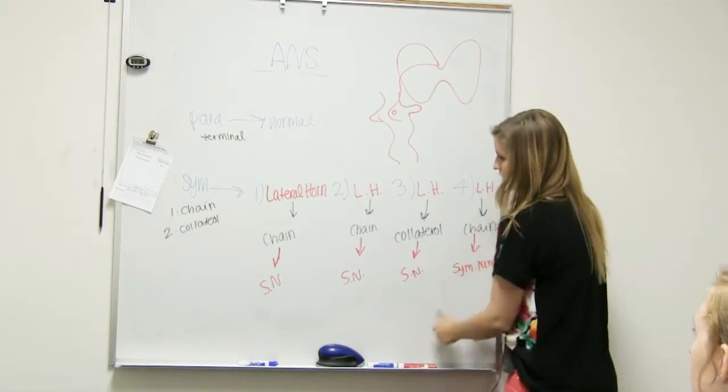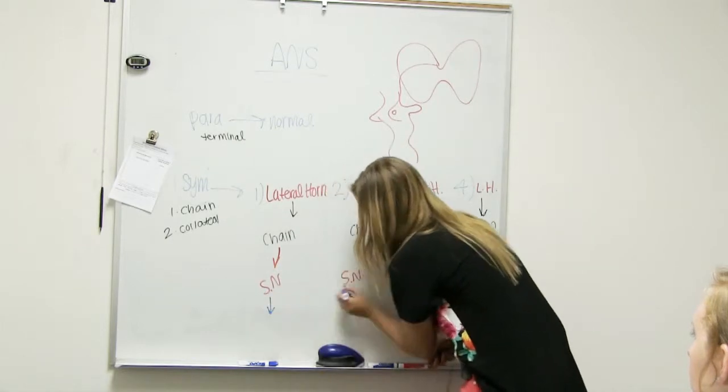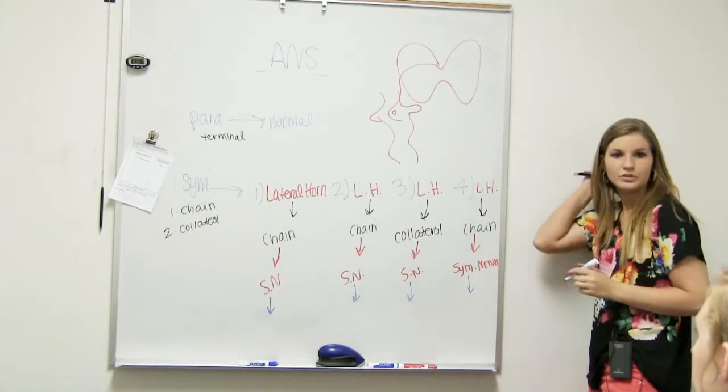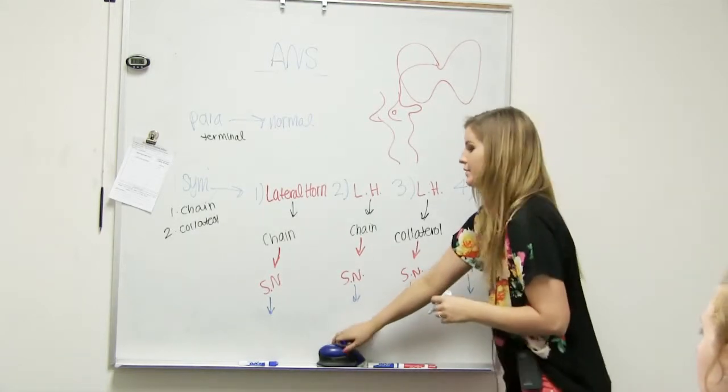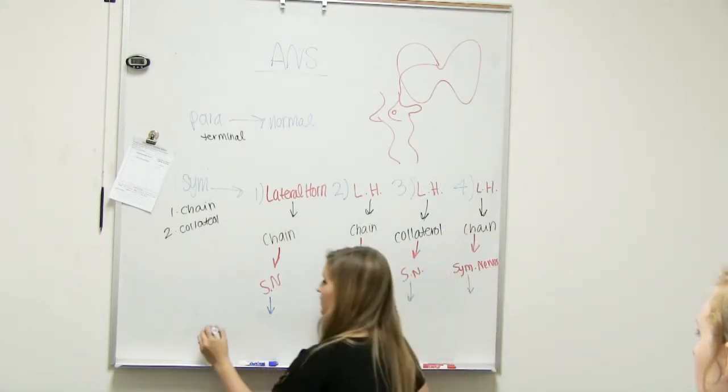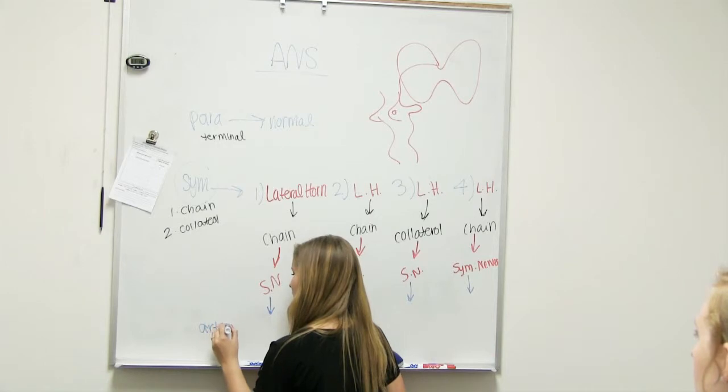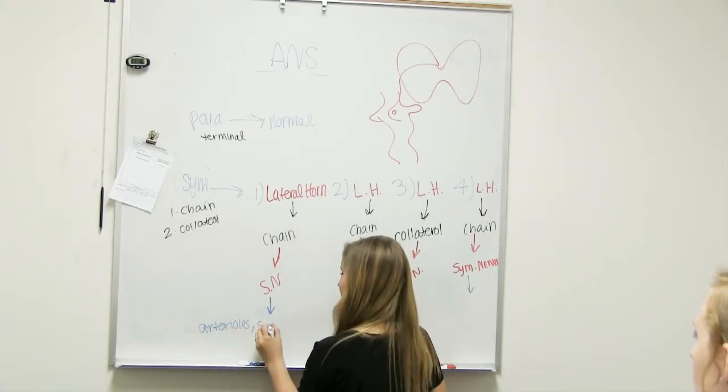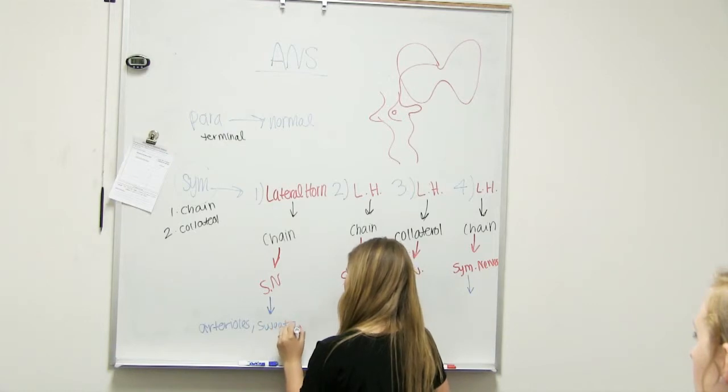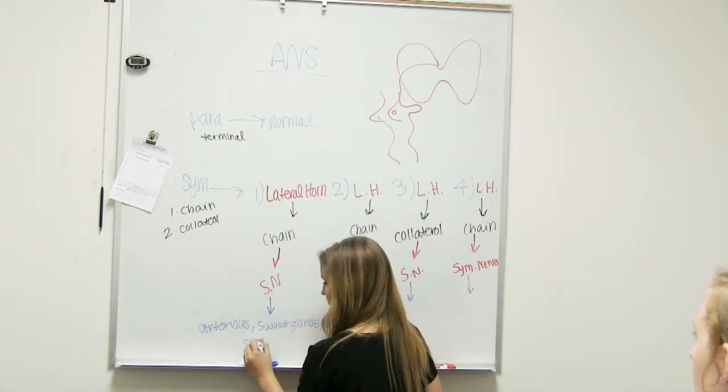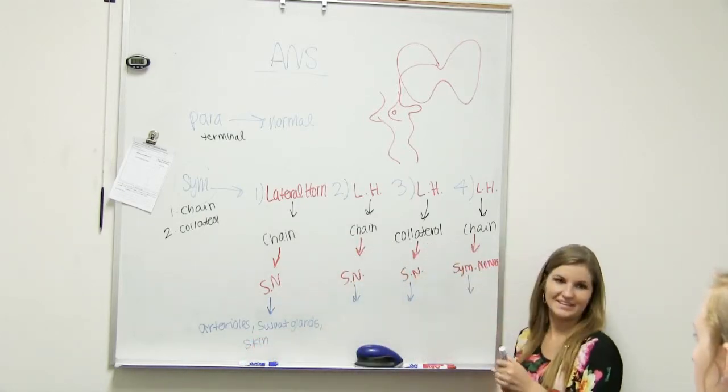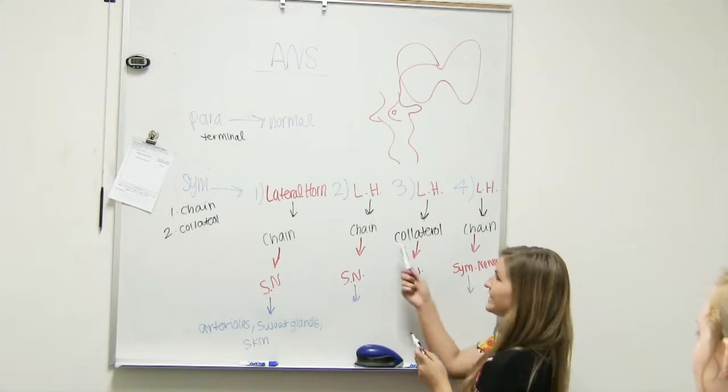And then the different part in all of them will be what is their effector. So the first one is going to be a few different things: your arterioles, your sweat glands, or your skin. So kind of think of the little guys, the little things in life.